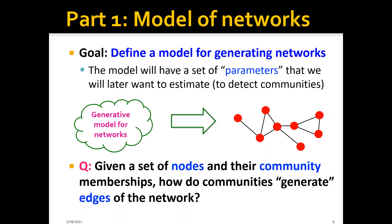The question here is: given a set of nodes and their community memberships, how do communities actually generate the edges of the networks? The nodes and the community memberships all correspond to the subset of the parameters here.